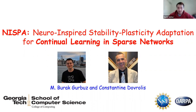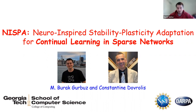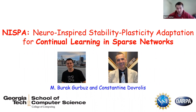My name is Burak, and I'm a PhD student at Georgia Tech. I'm working on the intersection of machine learning, neuroscience, and network science. I'm primarily a machine learning student, so I work more heavily on the machine learning side, but I try to get inspiration from neuroscience. We also use network science because deep learning architectures are neural networks, and we believe we can analyze them through the lens of network science.